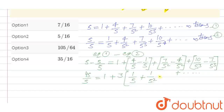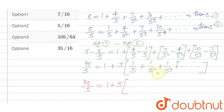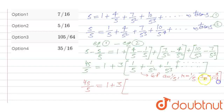So 4S/5 = 1 + 3 times (1/5 + 1/5² + 1/5³ + ...). This remaining part is a GP having first term a = 1/5 and common ratio r = 1/5. The sum of infinite terms of a GP is a/(1 - r), so we use a = 1/5 divided by (1 - 1/5).